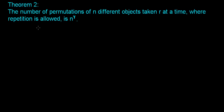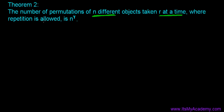Let's discuss the second theorem of permutation. The statement says: the number of permutations of n different objects taken r at a time, where repetition is allowed, is n to the power r.